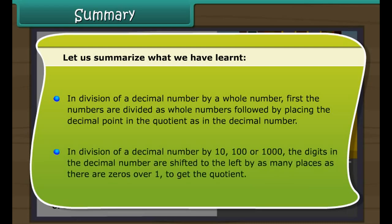In division of a decimal number by a whole number, the numbers are divided as whole numbers first, then the decimal point is placed in the quotient as in the original decimal number. In division by 10, 100, or 1000, the digits are shifted to the left by as many places as there are zeros to get the quotient.